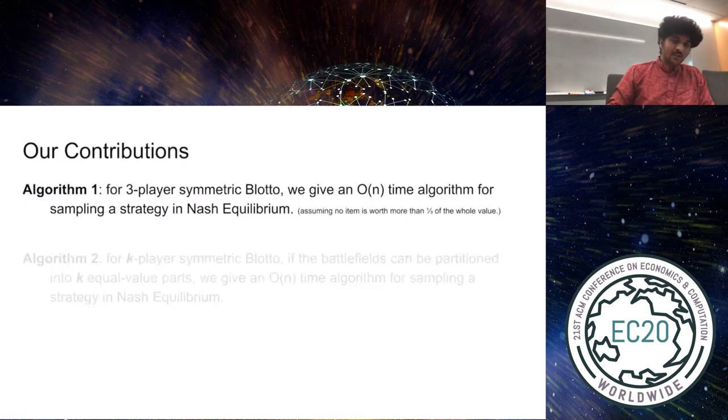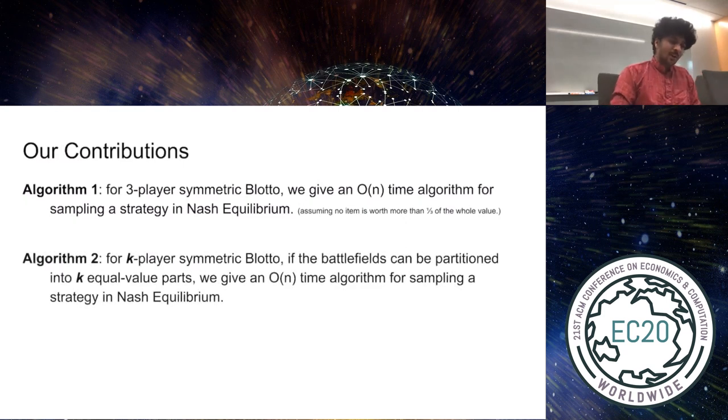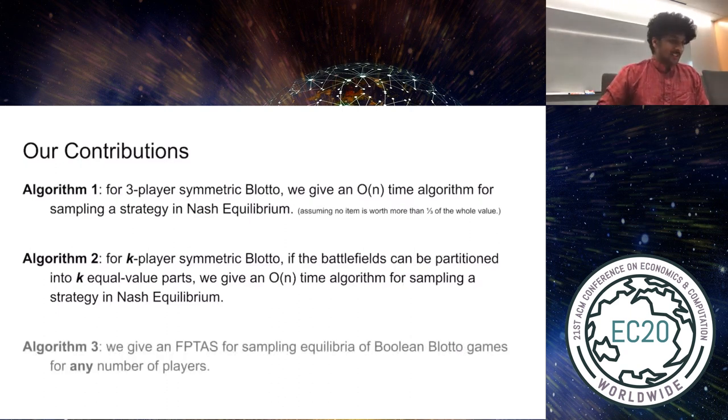What if there are more players? Excitingly, we're able to extend part of our derivations to arbitrarily large k. In particular, if the values of the battlefields can be partitioned into k sets, where each set has battlefields summing to the same value, then we give a linear time algorithm for sampling a strategy in equilibrium. Finally, we consider multiplayer Boolean Blotto, and we mathematically solve for equilibria. However, some of the quantities are NP-hard to compute, so we give a fully polynomial time approximation scheme for playing an epsilon-approximate equilibrium.